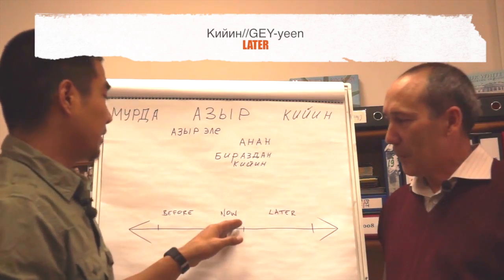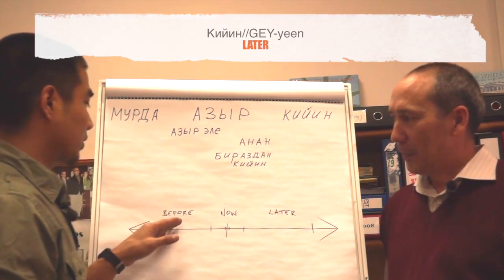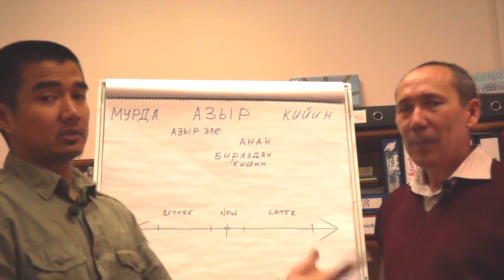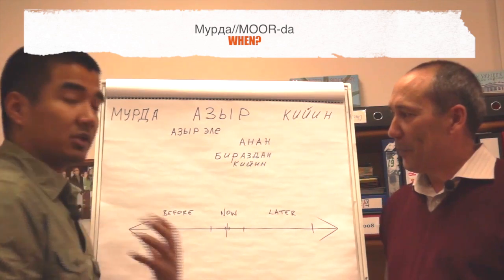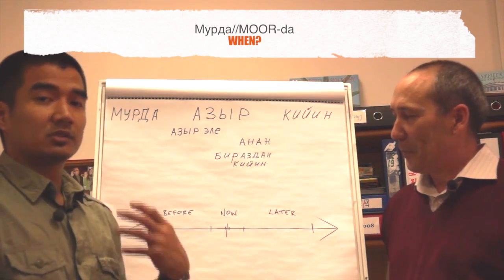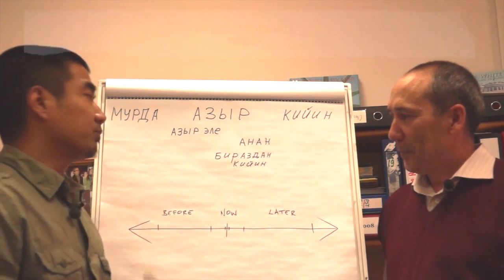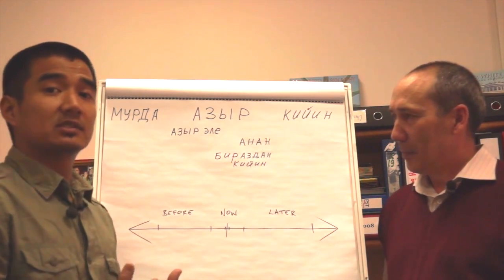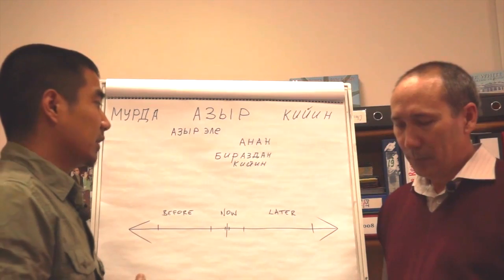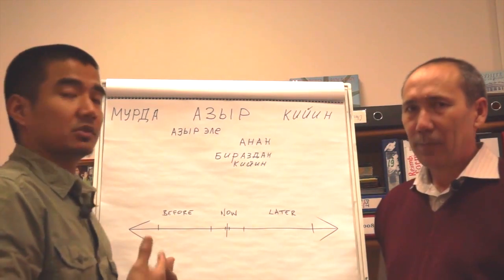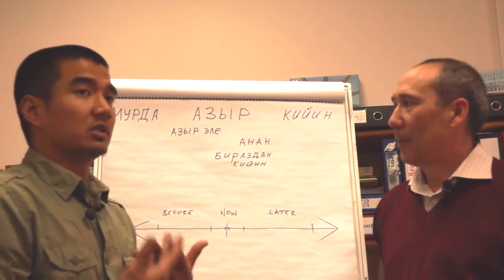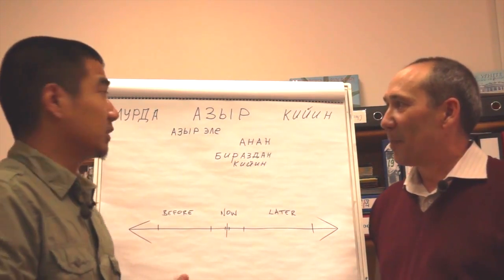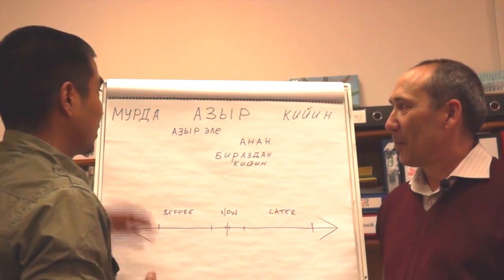And then we have the word "before," which is "Murda." Now you can use all of these words independently without attaching them to any sentences, if you're able to understand the question for the word "when," which again is "kachan."